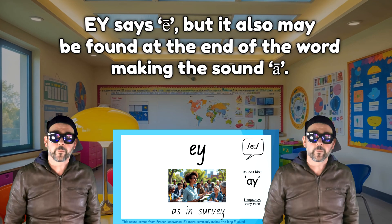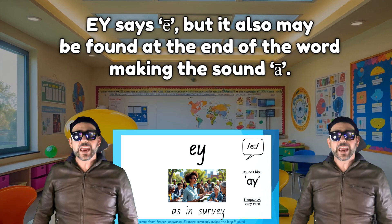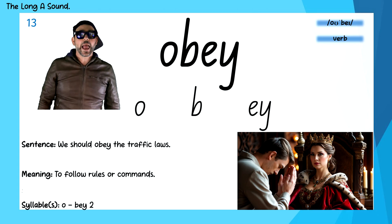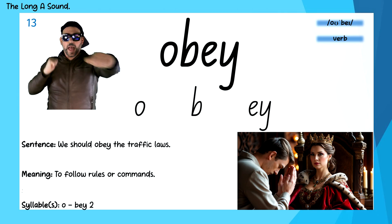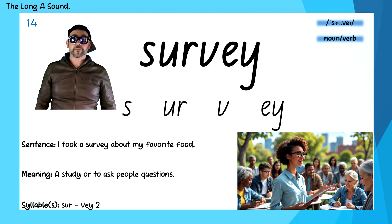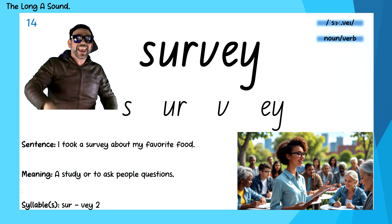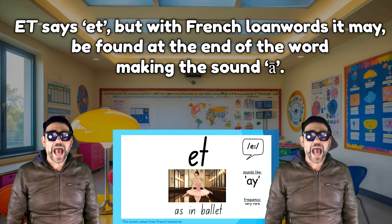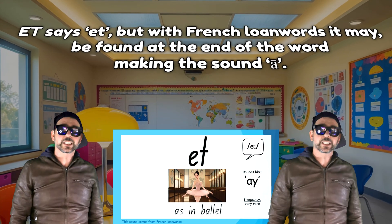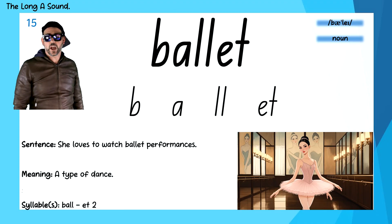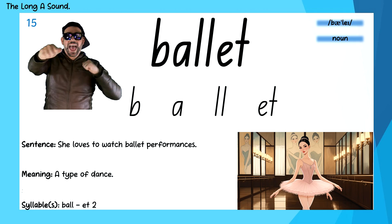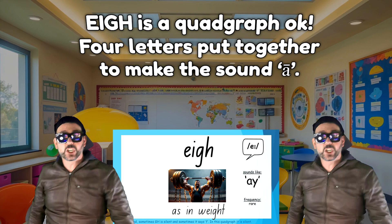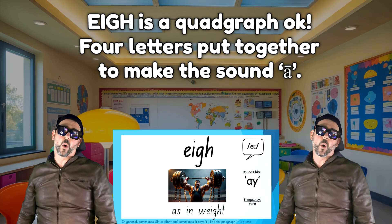Y says E, but it also may be found at the end of the word making the sound A. Obey — O-B-A-Y. Survey — S-R-A-Y. E-T says "et", but with French loanwords it may be found at the end of the word making the sound A. Ballet — B-A-L-A-Y. Buffet — B-A-T-H-A-Y.